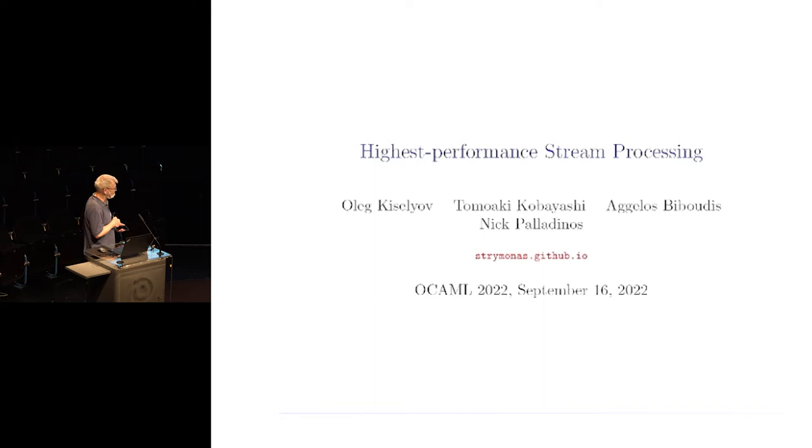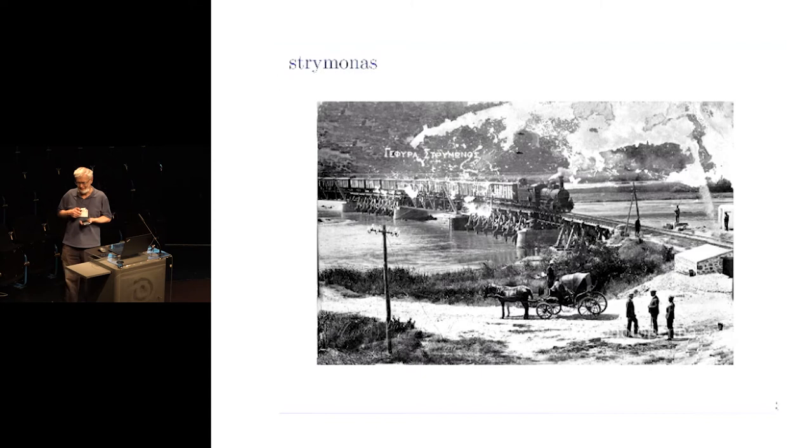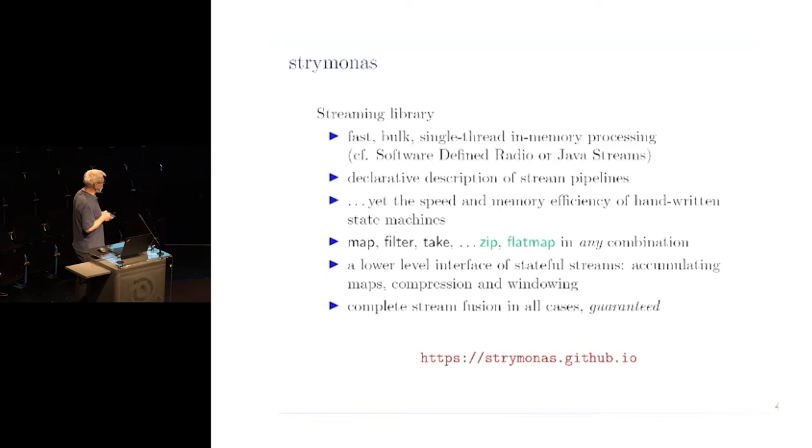Although the domain already existed, the content is new. I hereby publicly say that we are releasing this StreamOnus library. That is the most important part of this talk. So, what is StreamOnus? It's a river, as you see on this picture, and it's actually not that far away from here, on the other side of the region. It is also a streaming library for single threads in memory, fast and bulk image processing.